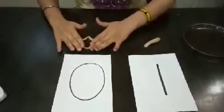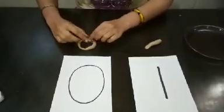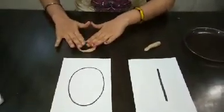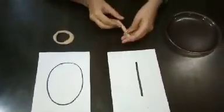This is zero. And this is one. Child will make zero and one like this again and again.